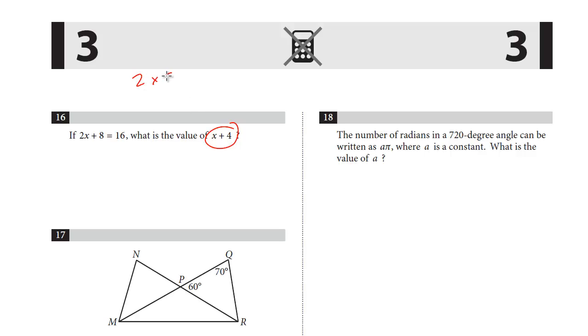So we get 2x = 8, x = 4, but remember, we're asked to find x + 4, it's 8.